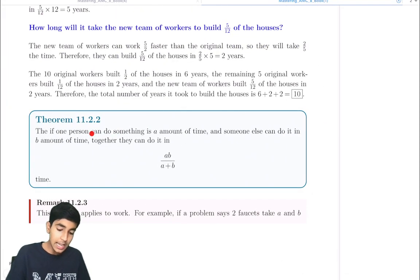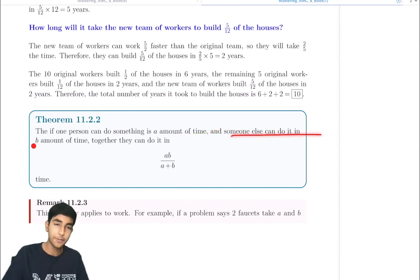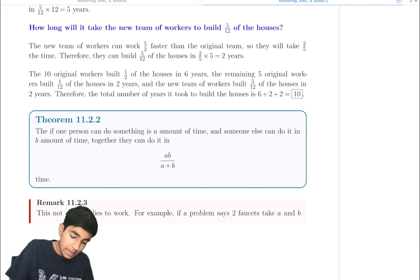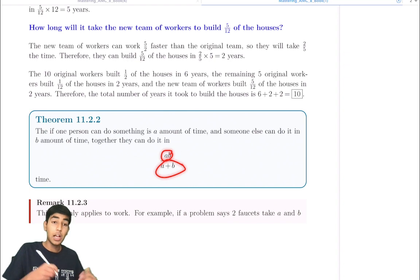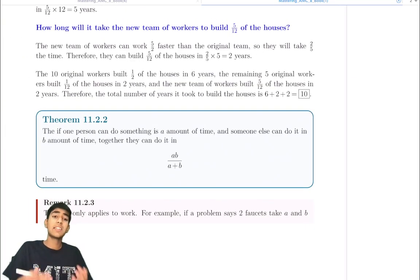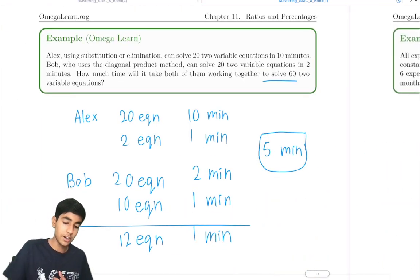Here's a good formula you can use: if person A can do something in A amount of time, and someone else can do it in B amount of time, then working together they can do it in AB over A plus B amount of time. This works for things besides work problems as well. You can use this formula as a shortcut, but if you forget, you can always use the same logic we just showed.